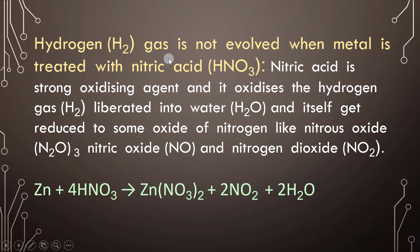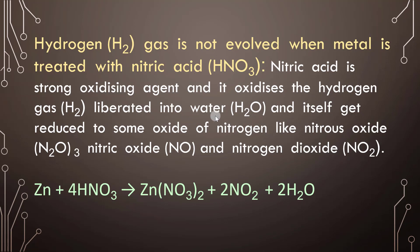Hydrogen gas is not produced when a metal is treated with nitric acid. When the reaction happens between a metal and nitric acid, hydrogen gas is not found in the products because nitric acid is a very strong oxidizing agent, and it oxidizes the hydrogen gas, converting it into water.